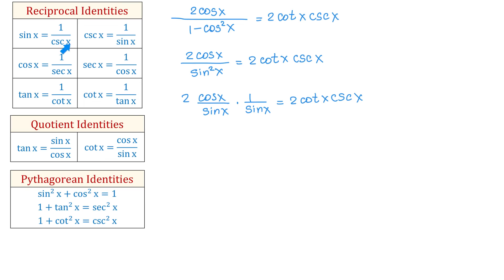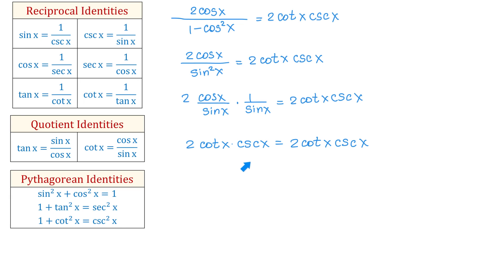According to the reciprocal identities, 1 over sine of x is cosecant of x. Then on the left side we will have 2 cotangent of x times cosecant of x equals 2 cotangent of x cosecant of x. So now both sides look identical.